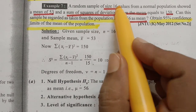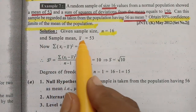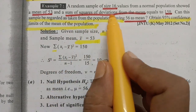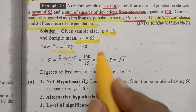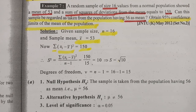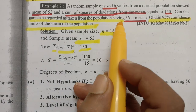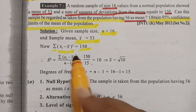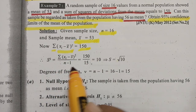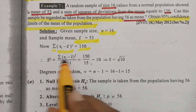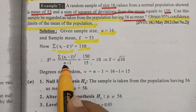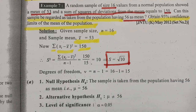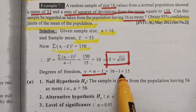The given values are: sample size n = 16, sample mean x̄ = 53, and the sum Σ(xi − x̄)² = 150. We compute s² = Σ(x − x̄)² / (n − 1) = 150 / 15 = 10, so the standard deviation s = √10. The degrees of freedom v = n − 1 = 16 − 1 = 15.